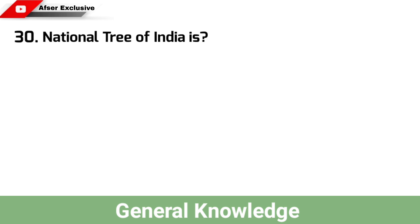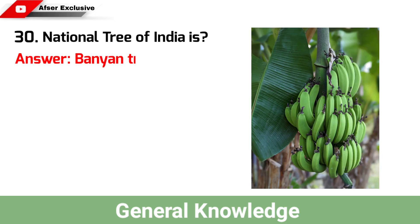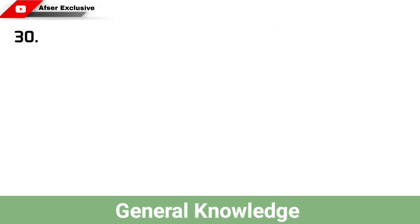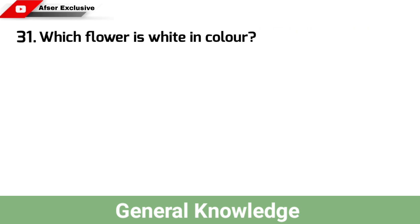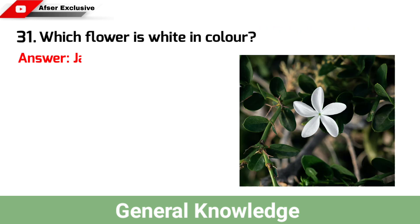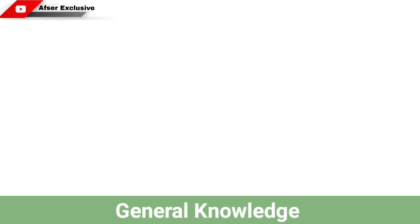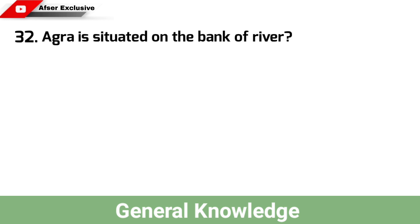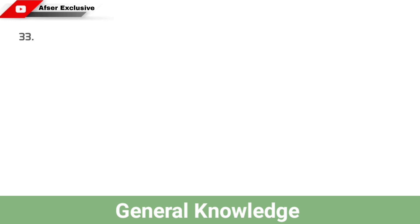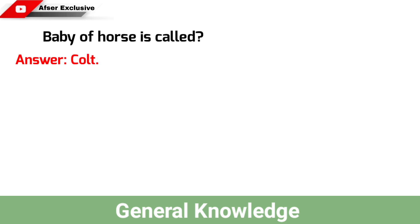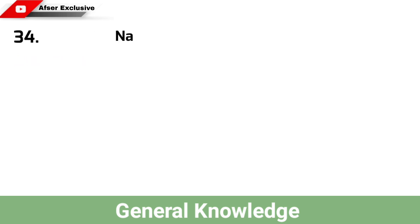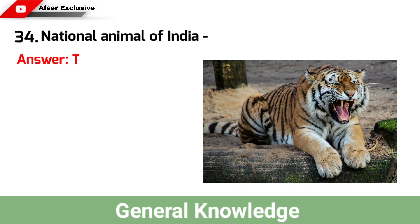National tree of India is? Answer: Banyan tree. Which flower is white in colour? Answer: Jasmine. Agra is situated on the bank of river? Answer: Yamuna. Baby of a horse is called? Answer: Colt. National animal of India? Answer: Tiger.